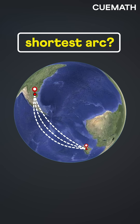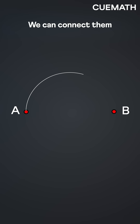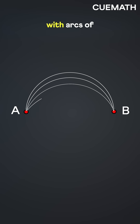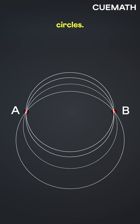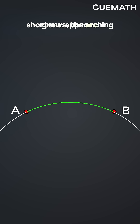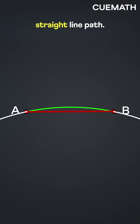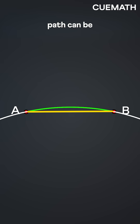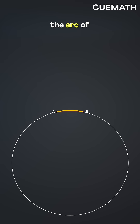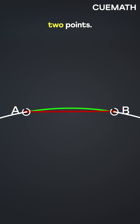But how do we find the shortest arc? Let's understand with two points in 2D — we can connect them with arcs of circles. As the circle grows, the arc shortens, approaching the shortest straight line path. So the shortest path can be thought of as the arc of the largest circle through the two points.